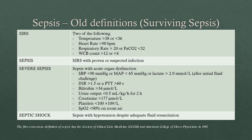SIRS included high or low temperatures, tachycardia, increased respiratory rate, and raised or low white cell count — you needed two of any of those. Sepsis was SIRS with a proven or suspected infection. Severe sepsis meant you had acute organ dysfunction, defined by things like blood pressure changes, raised lactate, raised INR, raised bilirubin, decreased urine output, raised creatinine, reduction in platelets, and a low SpO2 — obviously requiring blood tests to determine these things.